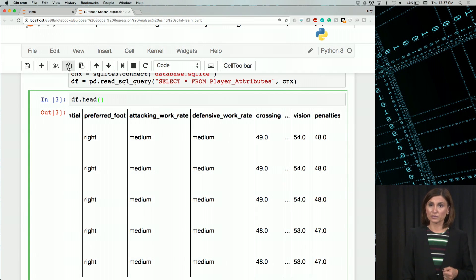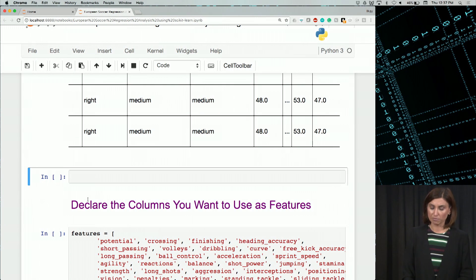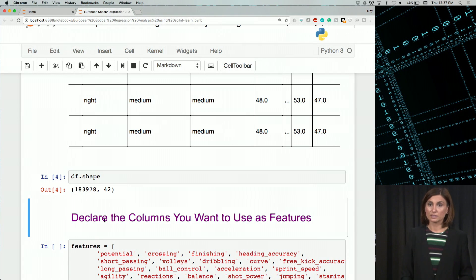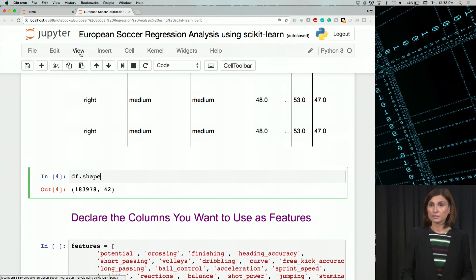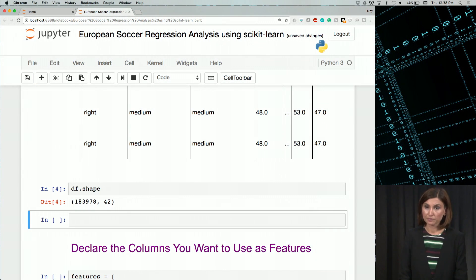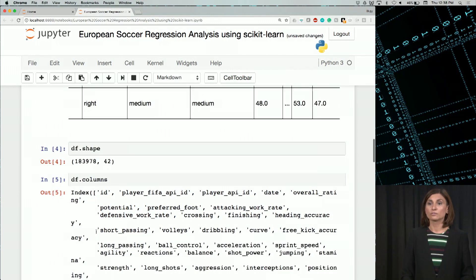We can look at the shape of this data frame. So I'll say df.shape. You see that there are about 42 features, a little less than that with the identifiers. Let's declare a list of these features. We can say df.columns.